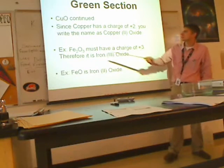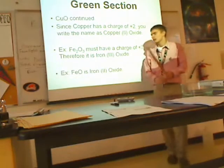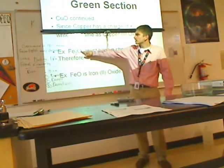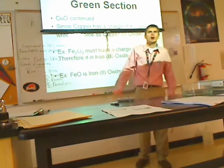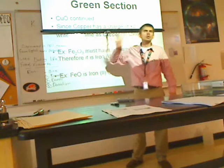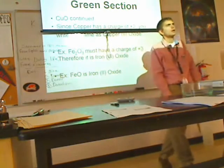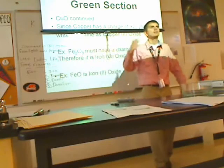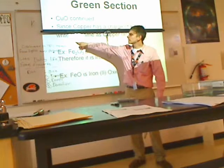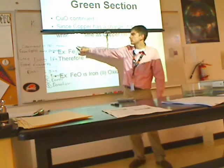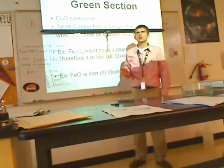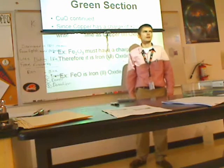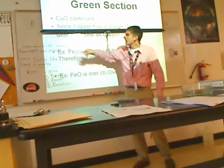Iron must have a charge of positive 3 here. Because oxygen has a charge of negative 2, always. So if you have three negative 2s, you have a total charge of negative 6 coming from the oxygen. That means you must have a total positive 6 coming from the iron to balance it out. So if you have positive 6 and you have two iron atoms, each one has to be positive 3. Total charge divided by the number of ions equals the single charge.